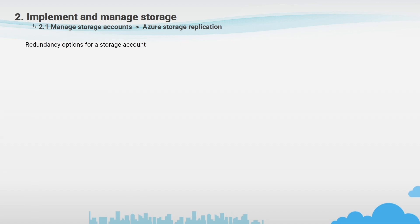The next topic is replication. Azure Storage always stores multiple copies of your data to protect from planned and unplanned events, including transient hardware failures, network or power outages, and massive natural disasters. Redundancy ensures that your storage account meets the SLA for Azure Storage even in the face of failures. The factors to consider when choosing a redundancy option include: how data is replicated in the primary region, whether data is replicated to a second geographically distant location, and whether your application requires read access to replicated data in the secondary region.